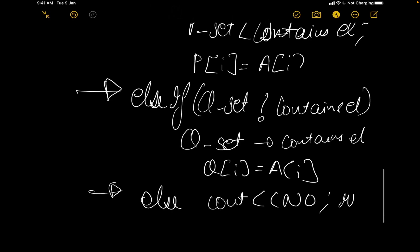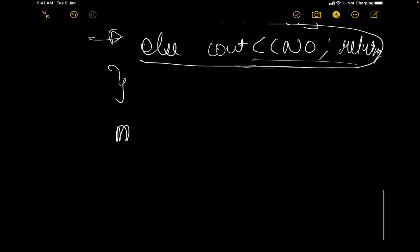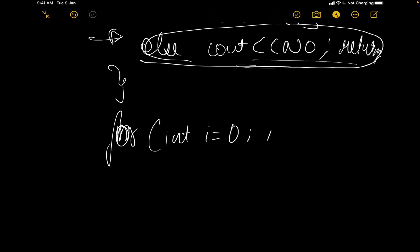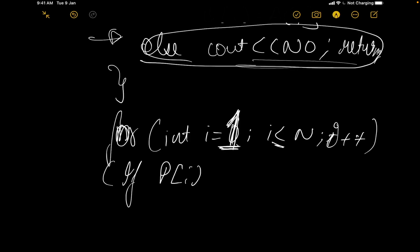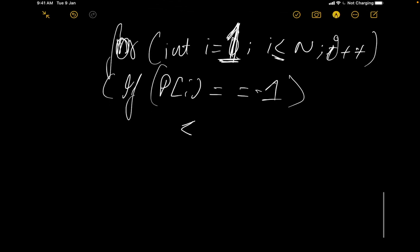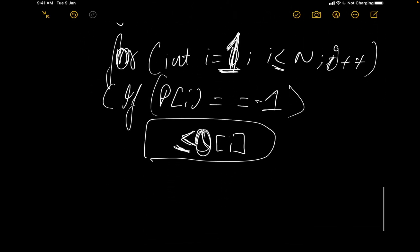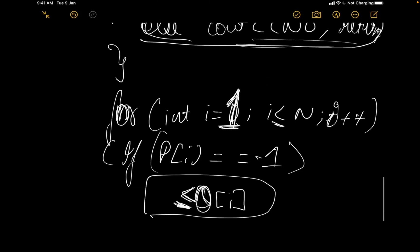After that loop completes without returning 'NO', all N primary assignments are done. I then make sets ppset and qqset containing all values from 1 to N that were not assigned to P and Q respectively. For each unfilled P[i], I want the greatest available element in ppset that is less than or equal to Q[i]. I use prev(upper_bound(ppset, Q[i])) — upper_bound gives the smallest element greater than Q[i], and prev steps back to give the largest element ≤ Q[i].